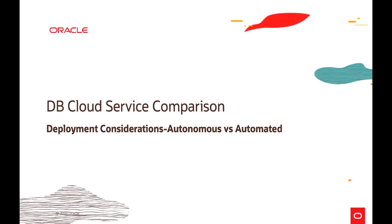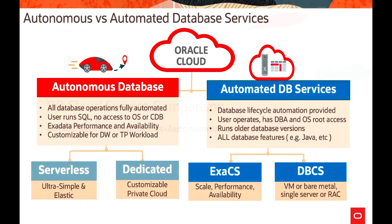Moving to DB cloud service comparison, we'll talk about the deployment considerations between autonomous versus automated databases. Automated is where Oracle has provided automation through scripts or tooling, but without machine learning or AI. The primary use case for Autonomous Database serverless is for data-driven results, departmental data stores, SMB customers, or developers who want to quickly deploy a database for application development, or even for data scientists.